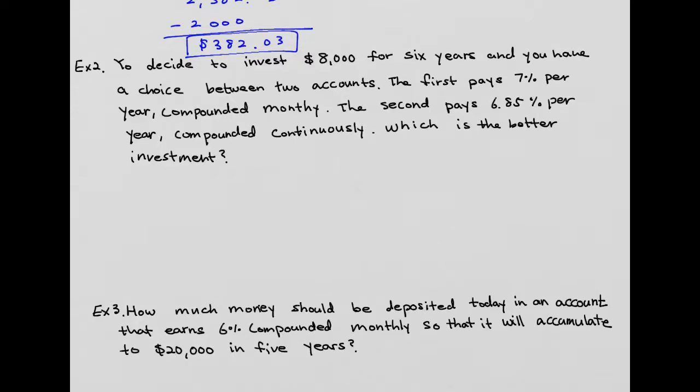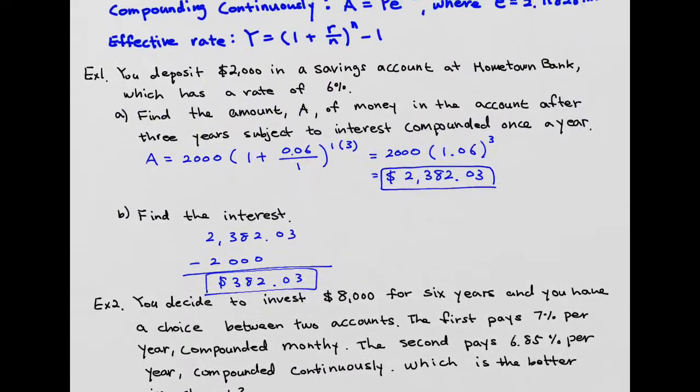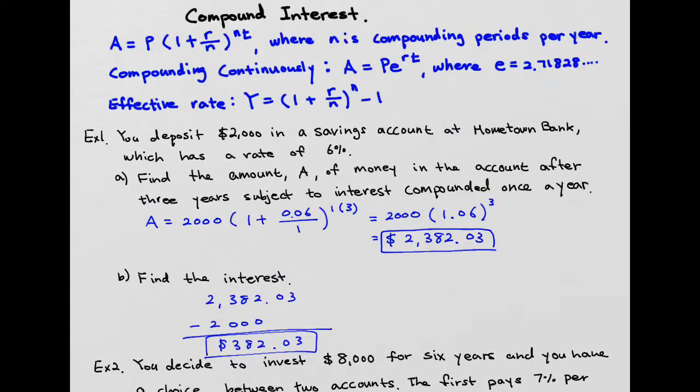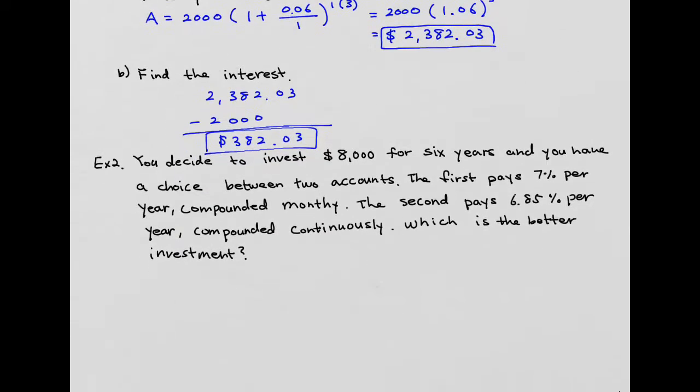Example 2: You decide to invest $8,000 for 6 years and you have a choice between two accounts. The first option is 7% interest compounded monthly. The second one is 6.85% compounded continuously. Remember seeing two different formulas? This is for continuously, this is compound monthly. We're going to figure that out.